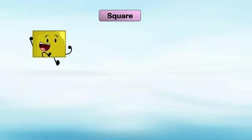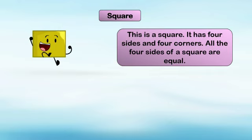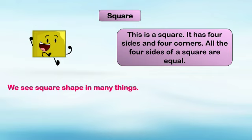Our next shape is square. This is a square. It has four sides and four corners — one, two, three, four. Let's see the four corners: one, two, three, and four. All four sides of a square are equal. We see square shape in many things.